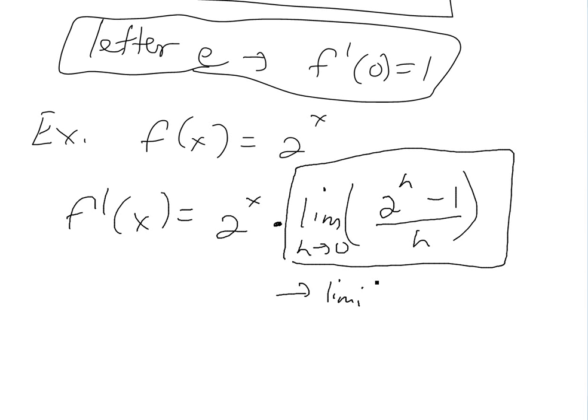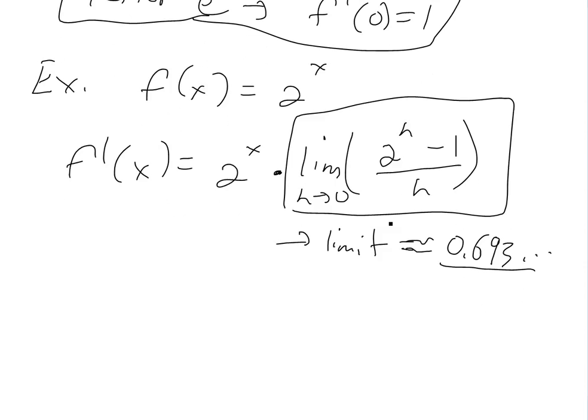This limit is equal to, it's roughly 0.693, et cetera. So it actually has a limit, I'll show you how in another video. So then if you write it, this would just be f'(x) equals 0.69 times 2^x.